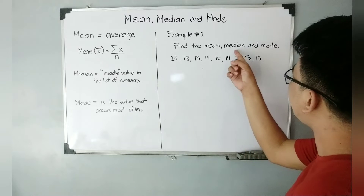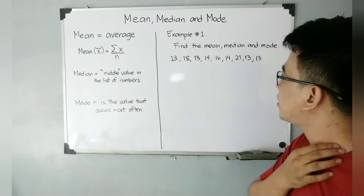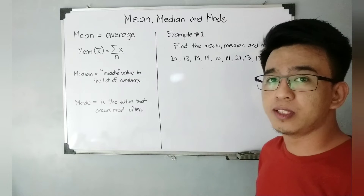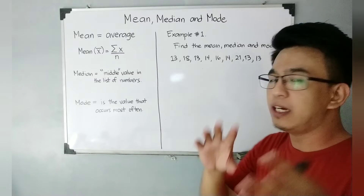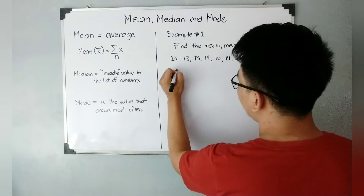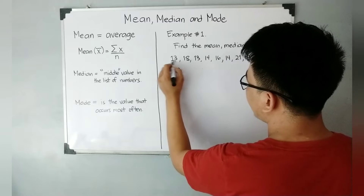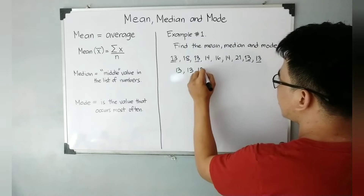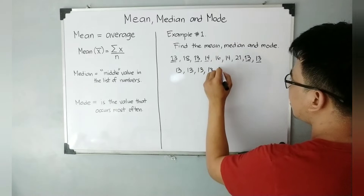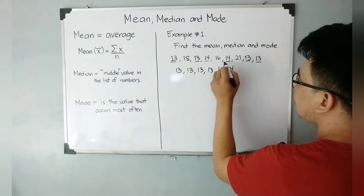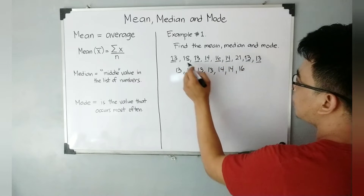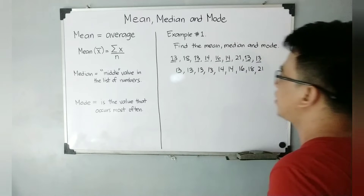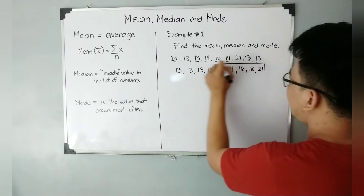Since we are asked for the median, I will arrange this dataset in ascending order first. You can use descending order, but I will choose ascending order — from least to greatest. So arranging them: 13, 13, 13, 13, 14, 14, 16, 18, 21. That gives us 9 elements in ascending order.